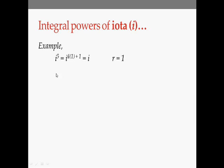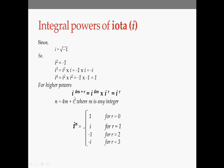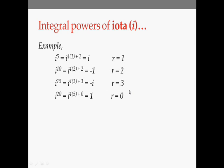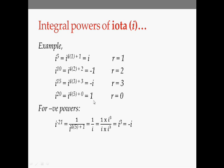For example, i⁵ can be written as 4(1) plus 1, so r equals 1, giving i⁵ = i. For i¹⁰, r equals 2, so i¹⁰ = minus 1. For i¹⁵, r equals 3, giving minus i. For i²⁰, r equals 0 and the value is 1.